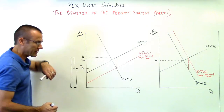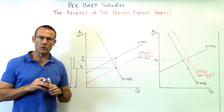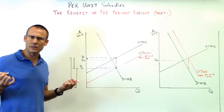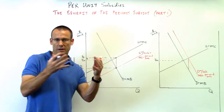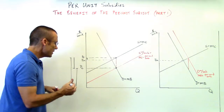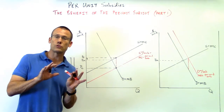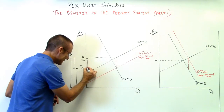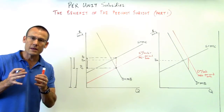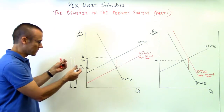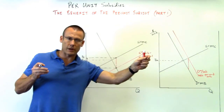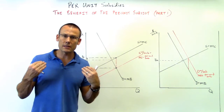Right off the bat we can notice something very interesting. The price producer went up by just a little bit — and remember, producers like their price going up because it's their per unit revenue. The price consumer, however, went down by a significantly larger amount. What does that mean? It means the consumer is actually getting the bigger benefit. Remember, we shifted the supply curve because the government physically wrote the check to the supplier — but the consumer is getting the bigger benefit.